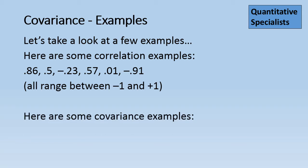But if you look at covariance, look at these values. You have 243, 12, 1.5, negative 432, 82, and so on.